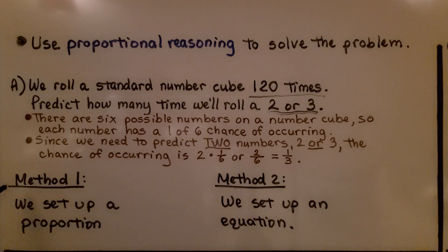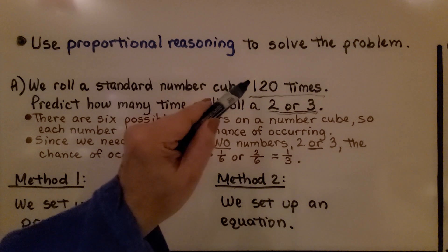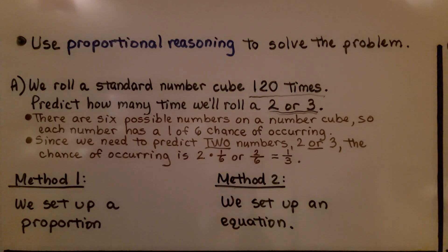The first method, we're going to set up a proportion. The second method, we're going to set up an equation. So remember that 1/3 and that we're going to roll the cube 120 times.